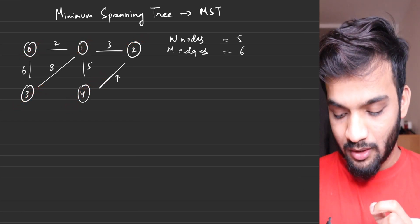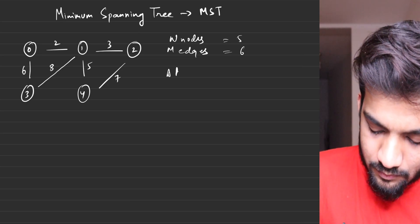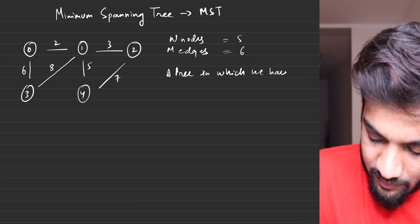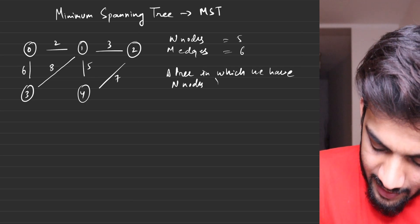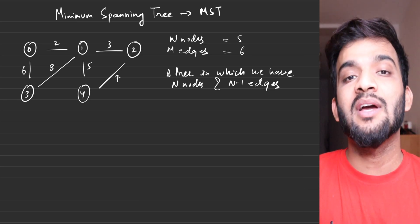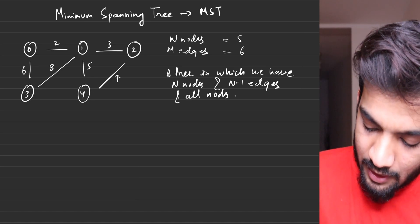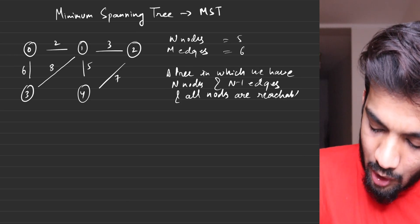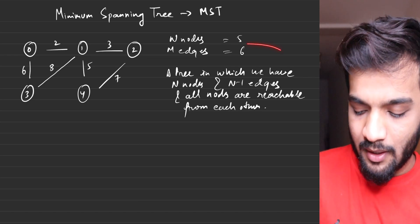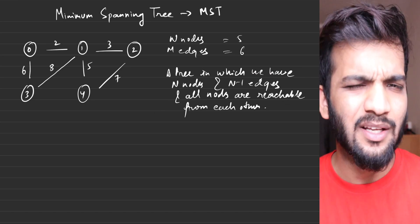The definition of a spanning tree is: a tree in which we have n nodes and n minus one edges, and all nodes are reachable from each other. So if someone asks you the definition of a spanning tree, it must have n nodes, n minus one edges, and all nodes should be reachable from each other.